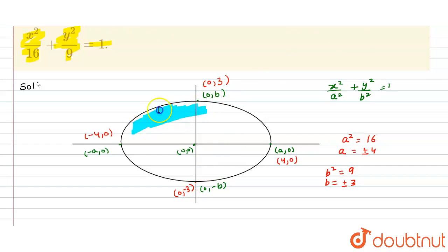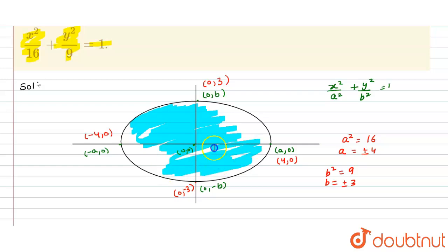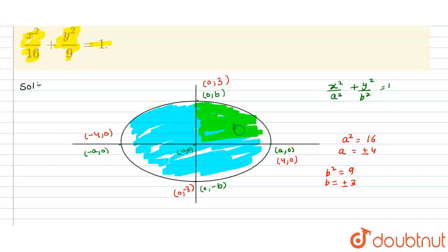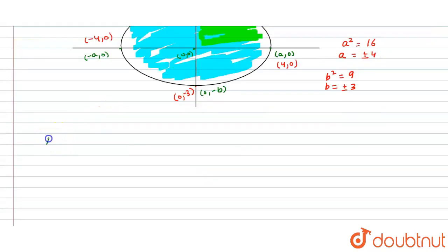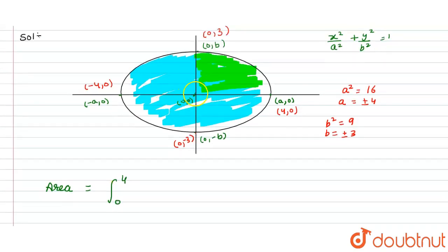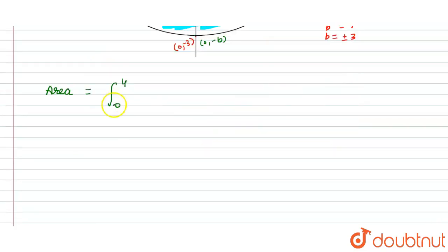Now we have to find the area of this complete ellipse. The ellipse has 4 symmetric parts, so first we find the area of one part — this one quadrant — and then multiply by 4 to get the complete area. The area of one part equals the integral with limit 0 to 4 of y dx.